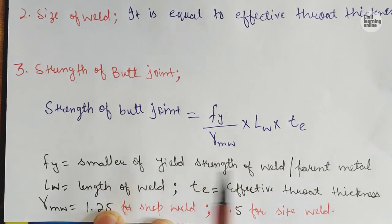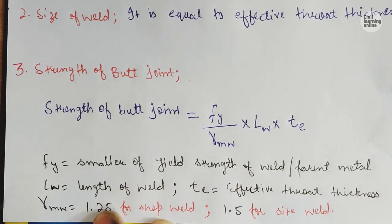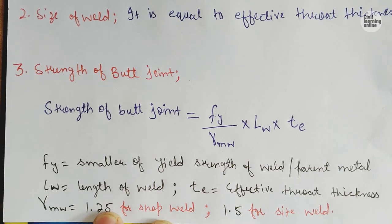Fy is the yield strength — we consider yield strength of both the metal plates and the welds, and we take the smaller yield strength. Lw is the length of weld, and Te is the effective throat thickness. We will determine how the length of weld is calculated, and the effective throat thickness will follow the two penetration conditions.